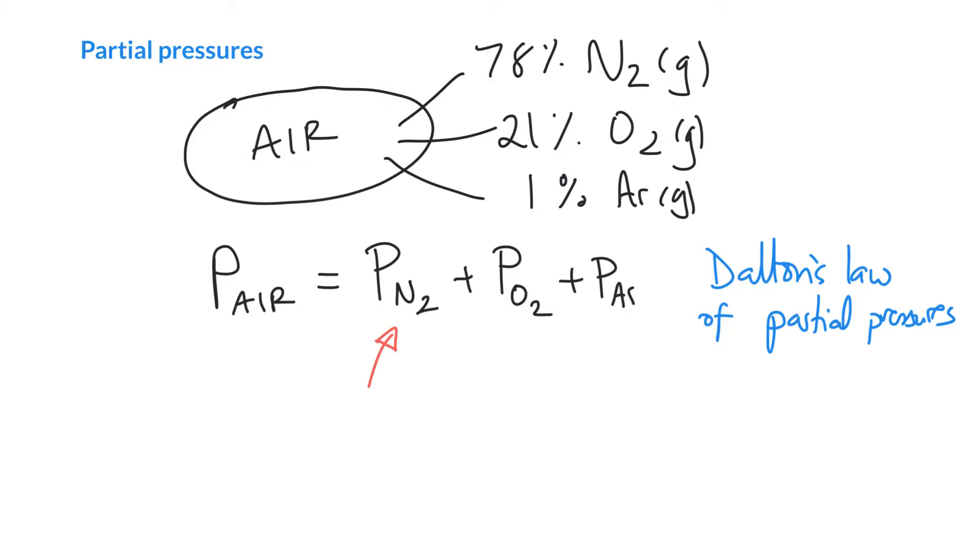Well, it turns out that we can just take the percentage of each gas. So if the nitrogen is 78%, that is 78 over 100. And we can multiply that by the total pressure. So this is the fraction of each gas. And we multiply that by the total pressure.